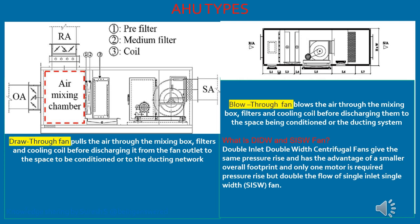In the types of AHU, we are seeing only the general type here — detail on EC fan and plug fan will be covered in the next video. There are two types of fan arrangement: draw-through fan and blow-through fan. A draw-through fan pulls the air through the mixing box, filters, and cooling coil before discharging it from the fan outlet. A blow-through fan blows the air through the mixing box, filter, and cooling coil before discharging it to the space.